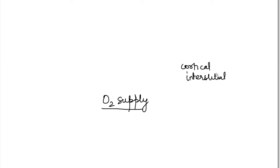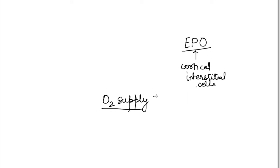Every part of the body senses whether the function of the system is working fully. The oxygen supply is sensed in the body — and this sensing occurs in the kidney. There are cortical interstitial cells in the kidney. They sense the oxygen level and produce a protein which we call erythropoietin, and due to this, RBC production is stimulated.